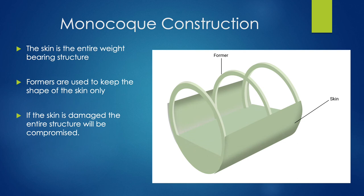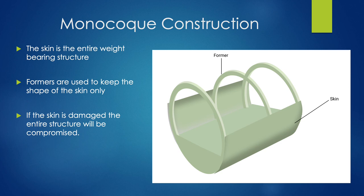First of all, what is a monocoque construction? A monocoque construction is when the skin of that structure is the entire weight-bearing structure — the skin has all the strength in it to hold the shape. There are formers inside used to keep the shape, but they aren't structural-bearing. It's the skin itself that holds the weight and strength of the aircraft. An example of this could be something like an egg. If you were to hold an egg and squeeze it really hard, it's probably unlikely to break, but once that shell cracks, the structural integrity of the egg is broken. That's similar to a monocoque construction where the skin holds all the rigidity and strength within the structure.